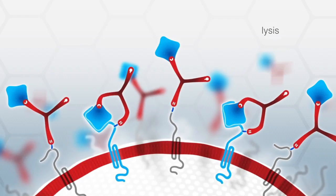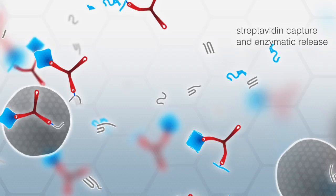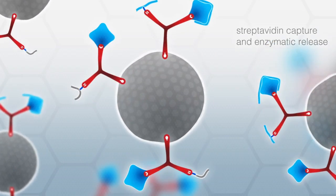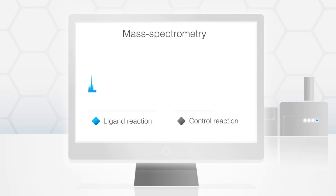After lysis and digestion, the glycopeptides coupled to triceps are purified via the biotin function and identified by mass spectrometry.